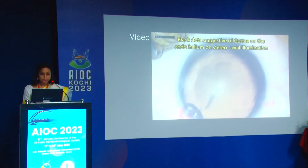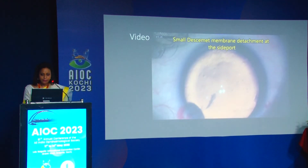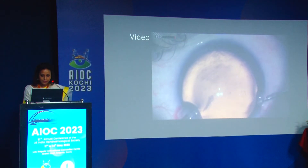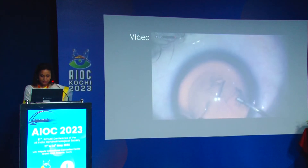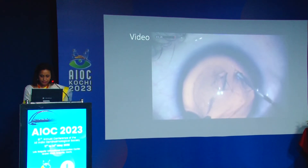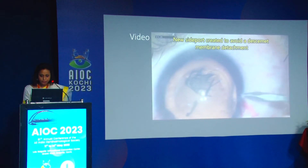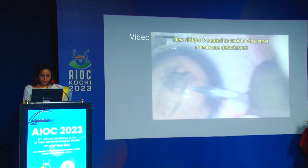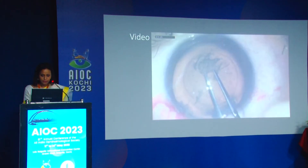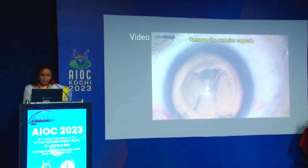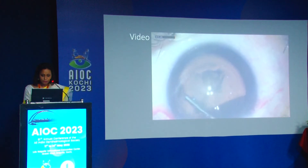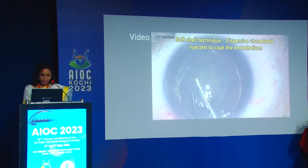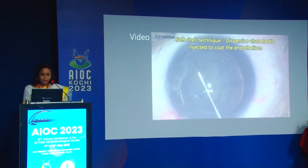As you can see, the black dots in the center are very suggestive of guttae. There was a small Descemet membrane detachment at the entry point, which is not ideal, so good sense prevailed — I made another side port to avoid that area. Once the capsulorhexis is done, we remove the anterior capsule and perform hydrodissection.